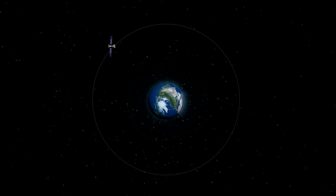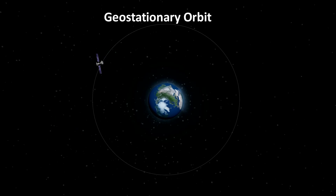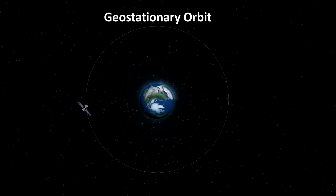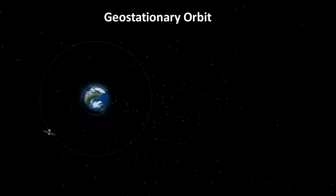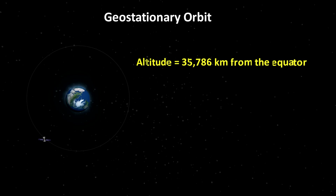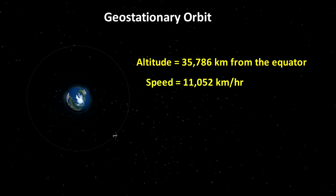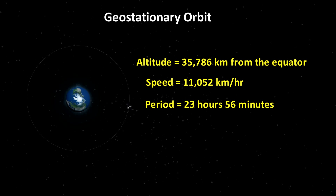A geostationary orbit is circular, and since the altitude of the satellite does not change, its speed must be constant. If you do the calculations, you will find that the geostationary orbit is 35,786 kilometers from the equator. The orbital period is 23.93 hours, or 23 hours and 56 minutes.